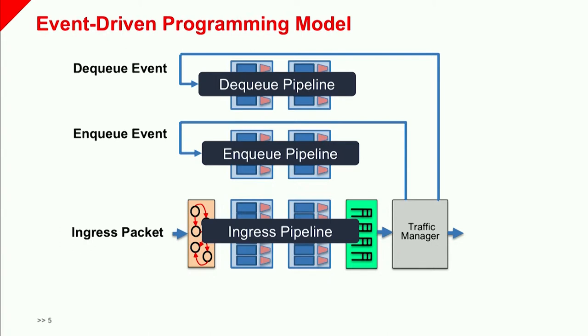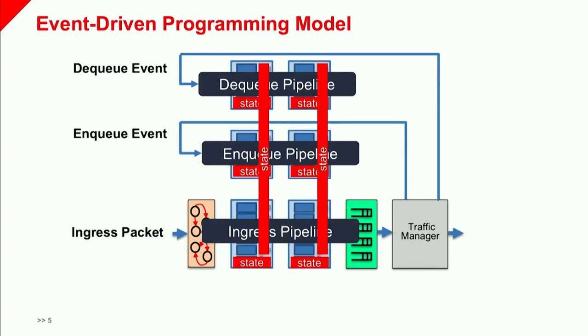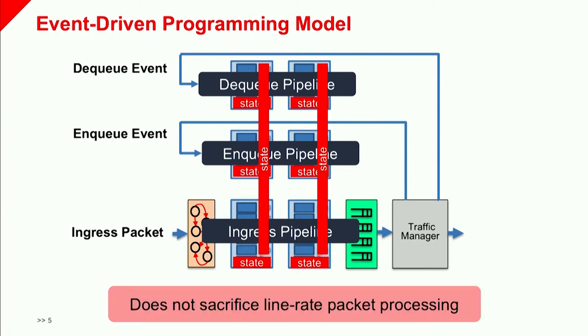Similarly for dequeue events: whenever a packet gets dequeued from the buffer in the traffic manager, it fires the dequeue event, which triggers processing in the dequeue pipeline. Each of these pipelines has some notion of local state as well as some notion of global shared state. At this point you're probably wondering — is this actually feasible to implement? We believe this sort of programming model is indeed supportable and can still support processing packets at line rate.